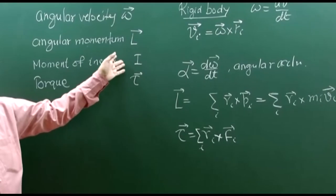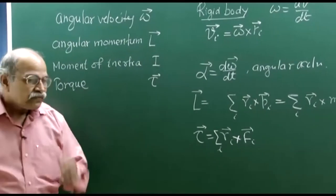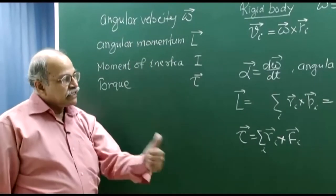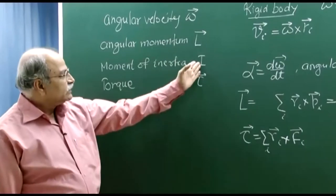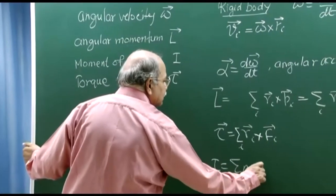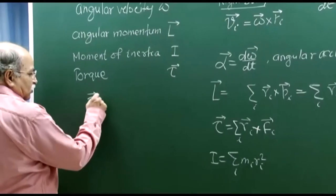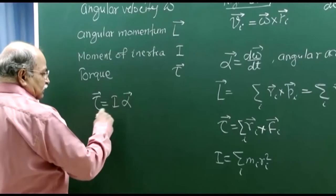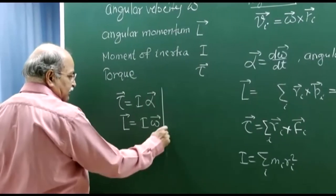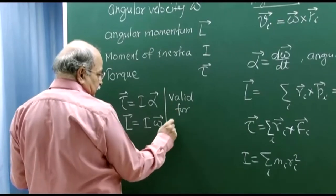Moment of inertia is something which is more tricky. Some elementary textbooks define moment of inertia about an axis, assuming rotation is about a fixed axis of rotation. Then the definition is simple: I = Σm_i·r_i². You sometimes hear that torque equals I·alpha, or L equals I·omega. But these equations are valid in certain situations only, not everywhere.